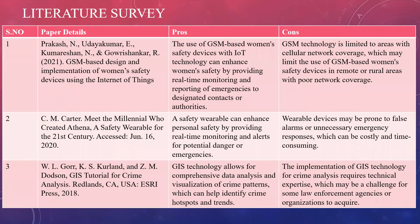Here is the literature survey. The first paper by Prakashen, Udaykumari, Kumarashan, and Kauri Shankar (2021) is titled 'GSM-based design and implementation of women's safety devices using the Internet of Things.' The pros are that GSM-based women's safety devices with IoT technology can enhance women's safety by providing real-time monitoring and reporting of emergencies to designated contacts or authorities. The consequence is that GSM technology is limited to areas with cellular network coverage, which may limit its use in remote or rural areas with poor network coverage.